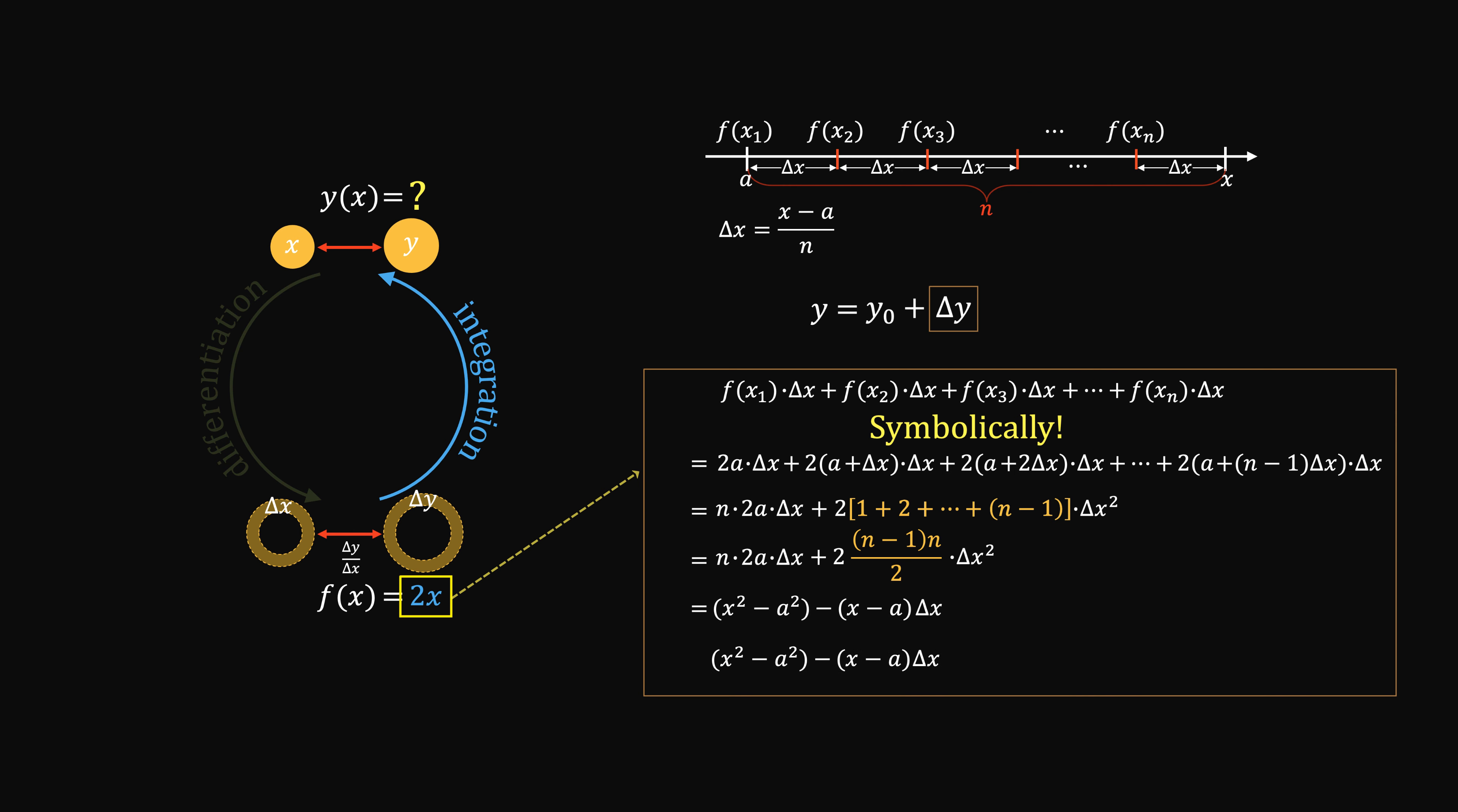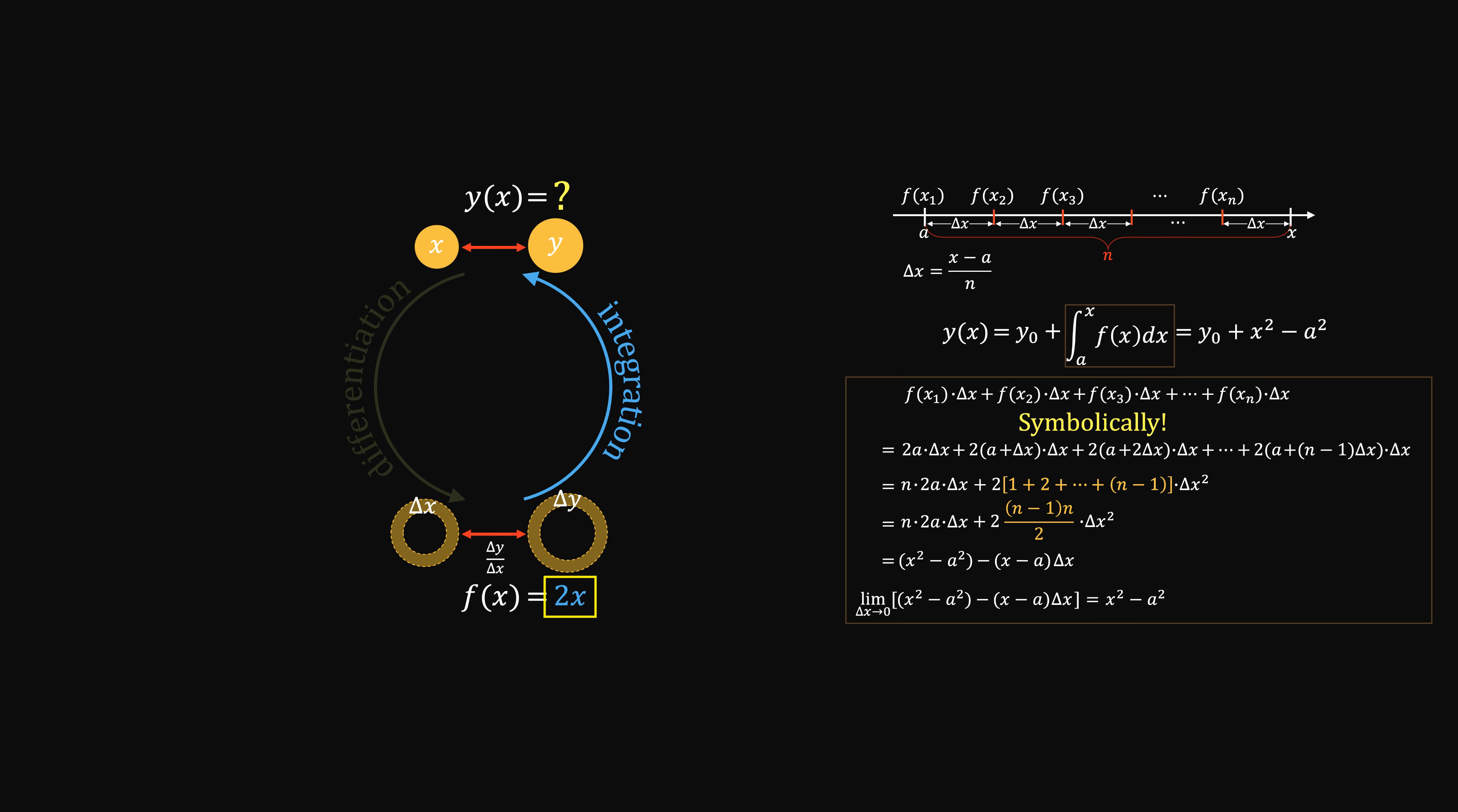In the end, you can use the limit process to get the precise answer. But what's remarkable is, you have obtained a general relationship between the two, not just one specific value. So aggregating the incremental changes using the velocity formula, we can find out the general relationship.